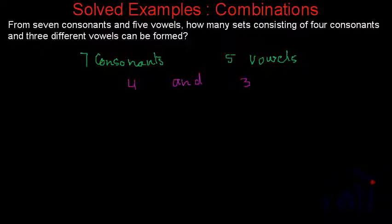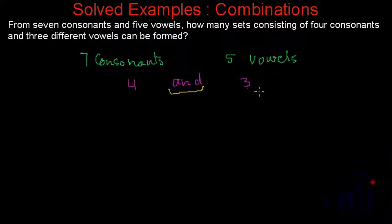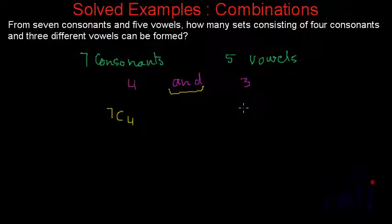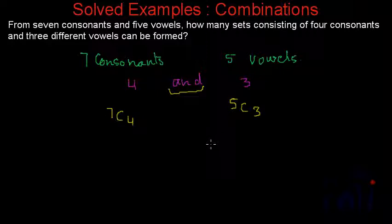So what is the catch? The catch is this AND. AND means we have to multiply the number of ways in which we can select four consonants out of seven and three vowels out of five. The number of ways to select four consonants out of seven is 7C4, because order does not matter. And the number of ways to select three vowels out of five is 5C3. Again, order does not matter. Since we have an AND, we multiply these two choices.